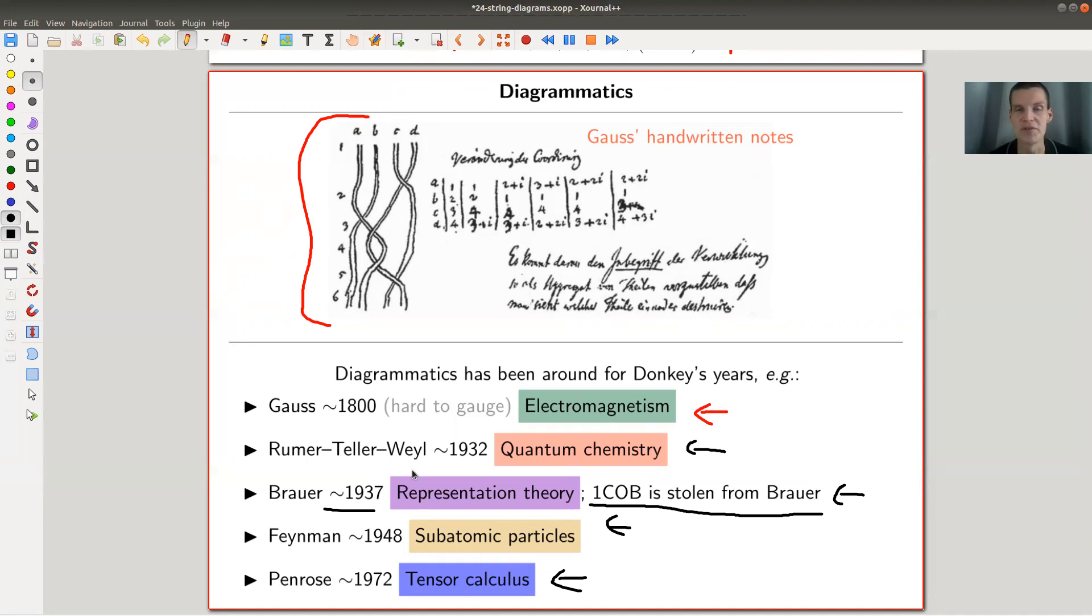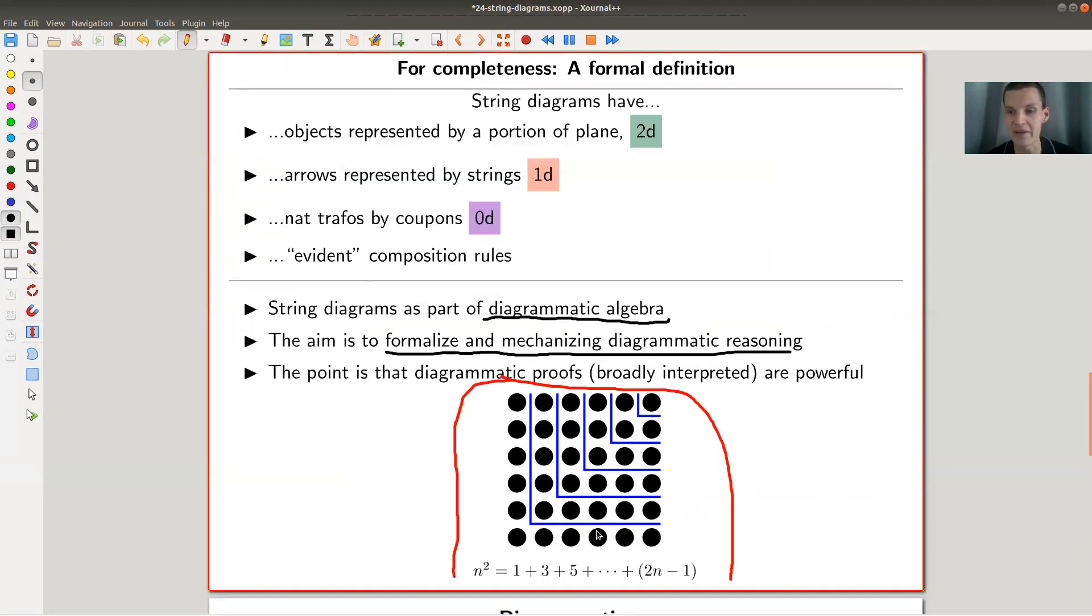what we want is to kind of formalize diagrammatic reasoning so that you can just say, okay, here's a complicated statement. Here's a nice proof. I don't have to explain anything anymore. And done.